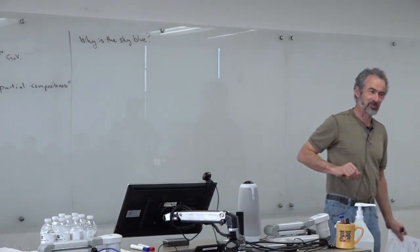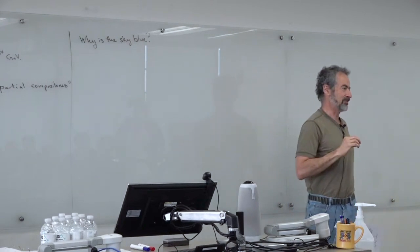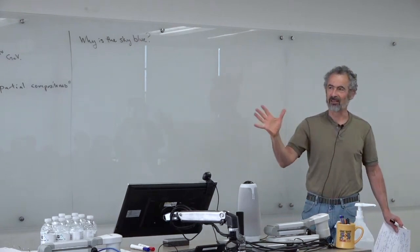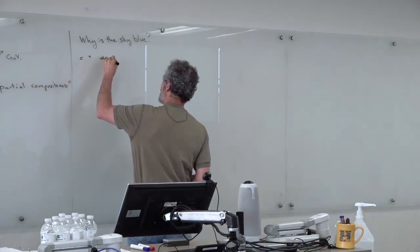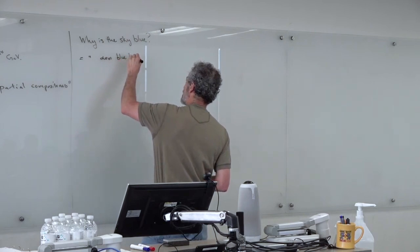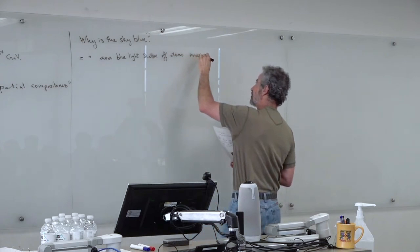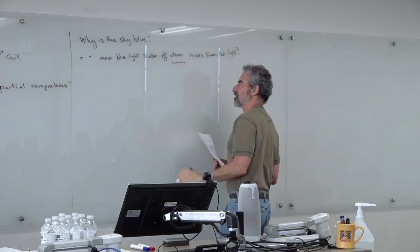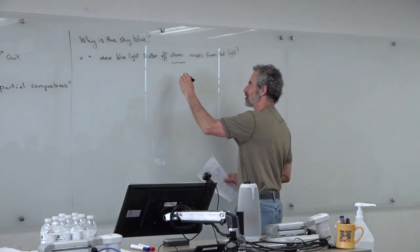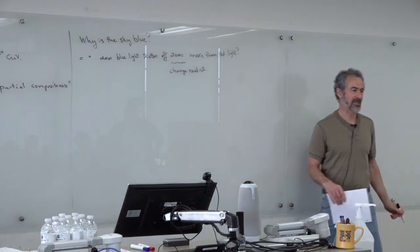When you look out and the sky is blue, the reason you see light there is because light has come from the sun, hit atoms in the atmosphere, and then bounced to your eye. For some reason it's bouncing blue light more than red light. So the question becomes: why does blue light scatter off atoms more than red light? The atoms in the atmosphere are electrically neutral, so we need to think about how to describe light scattering off a neutral object.